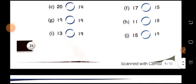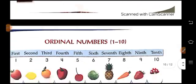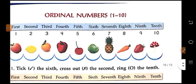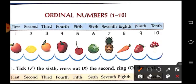So let's move on to the next topic: ordinal numbers 1 to 10. So let's see: 1st, 2nd, 3rd, 4th, 5th, 6th, 7th, 8th, 9th, 10th.